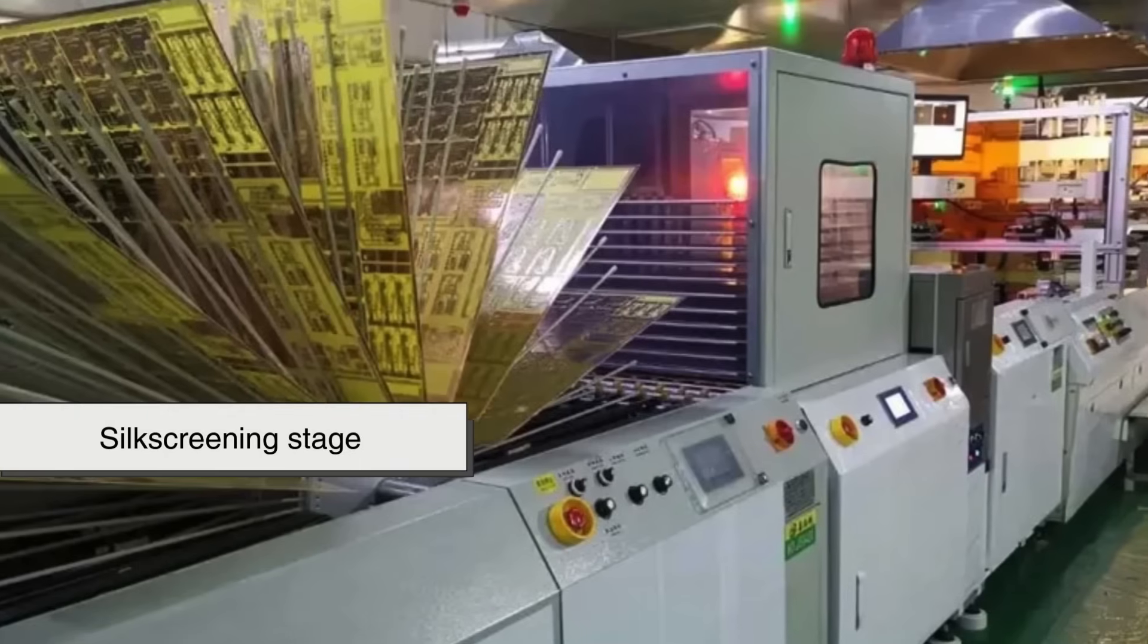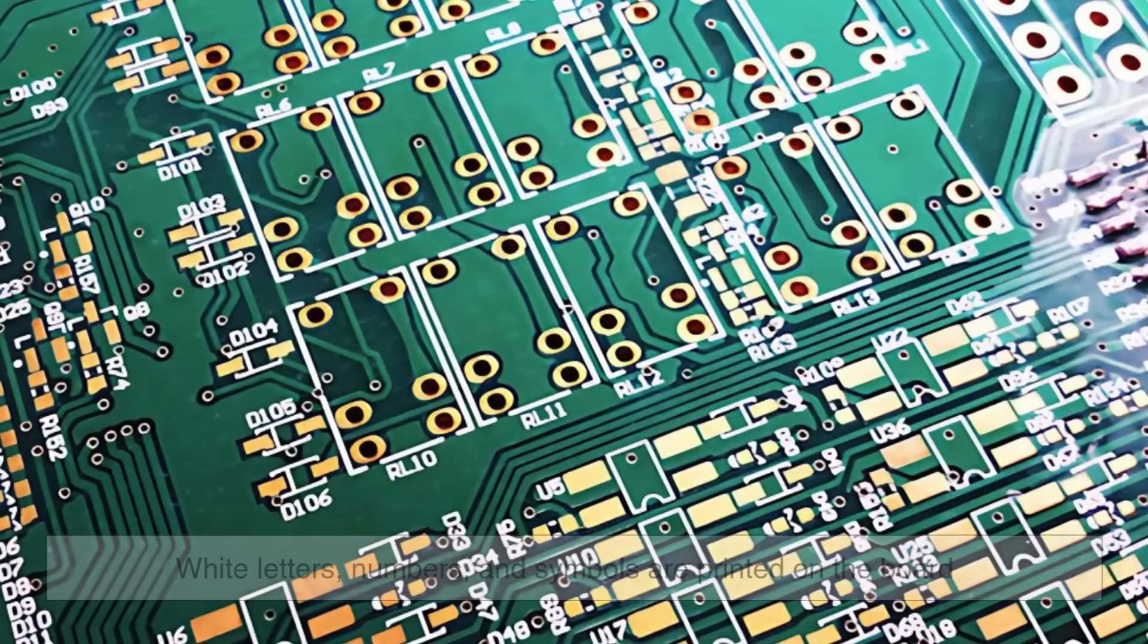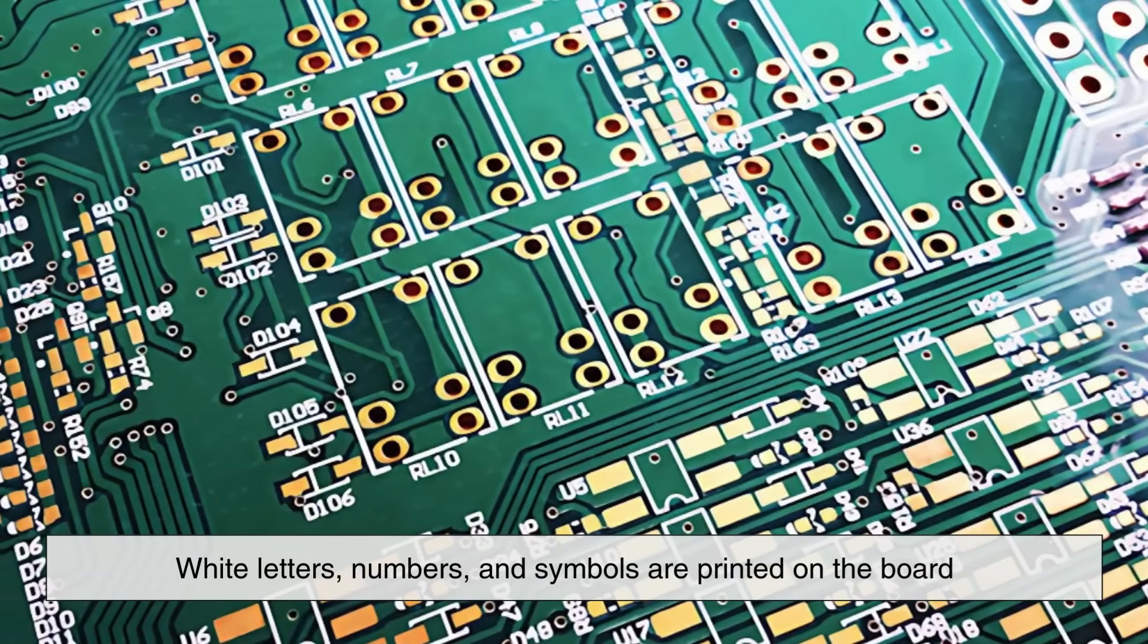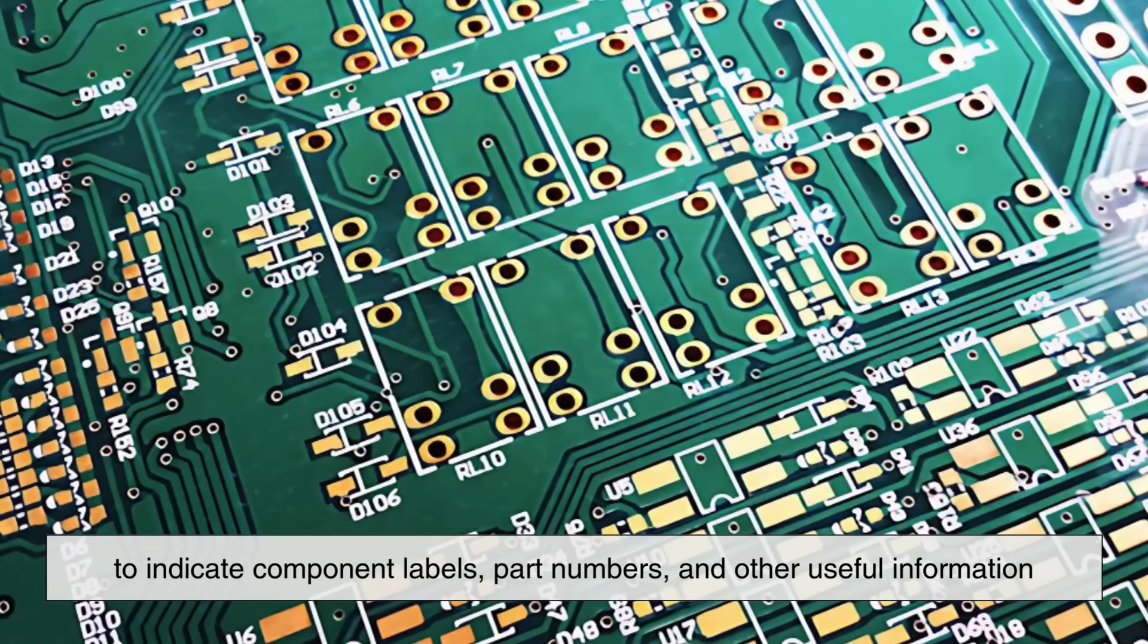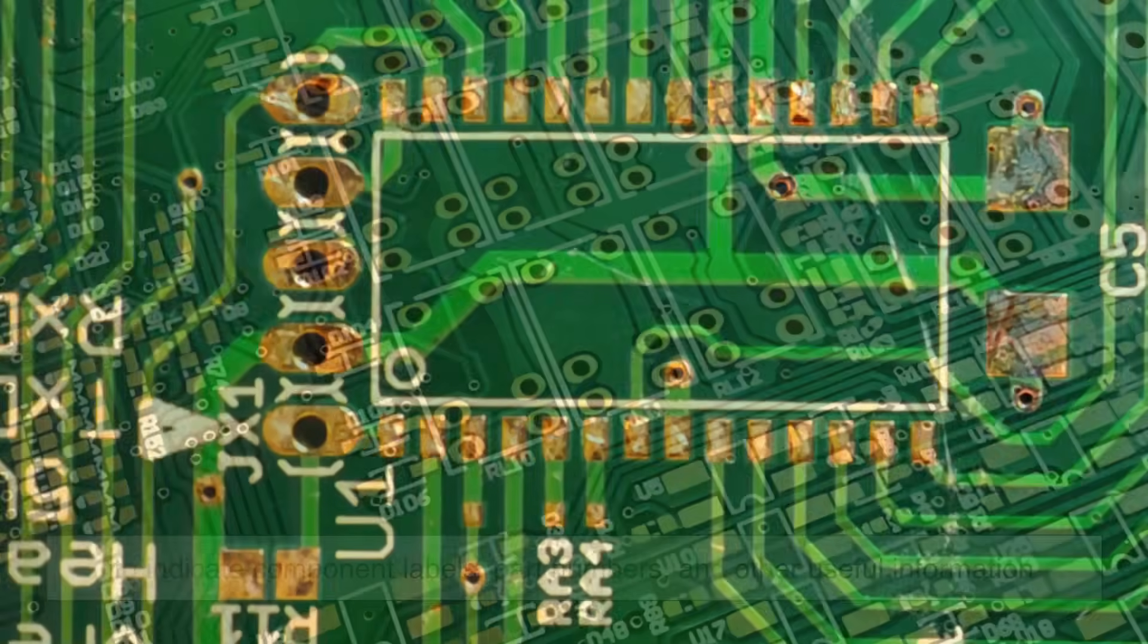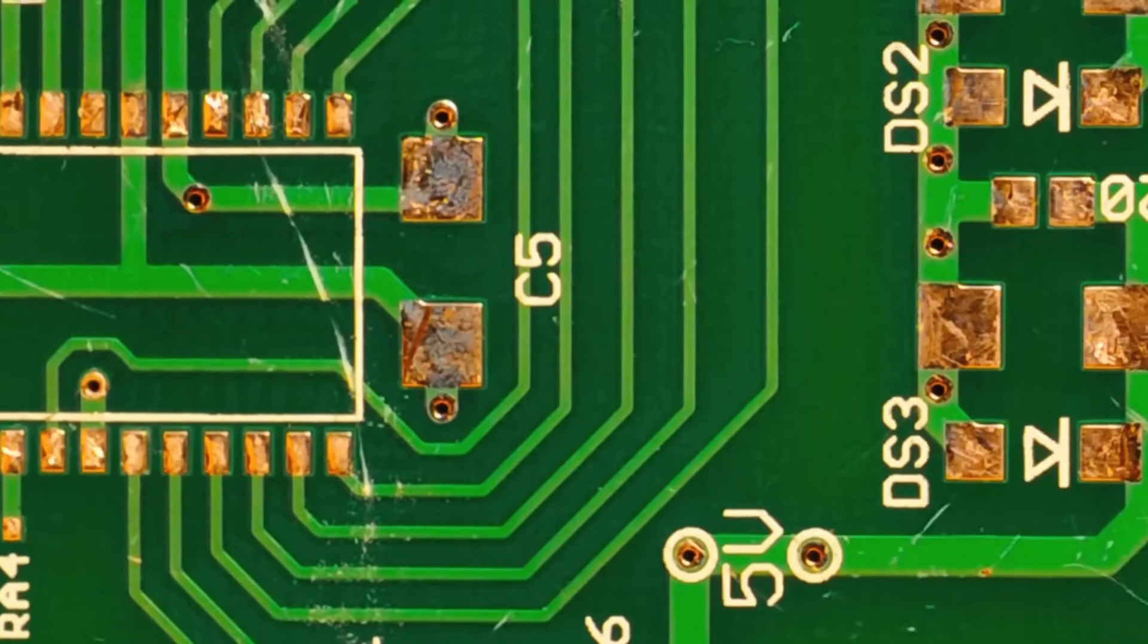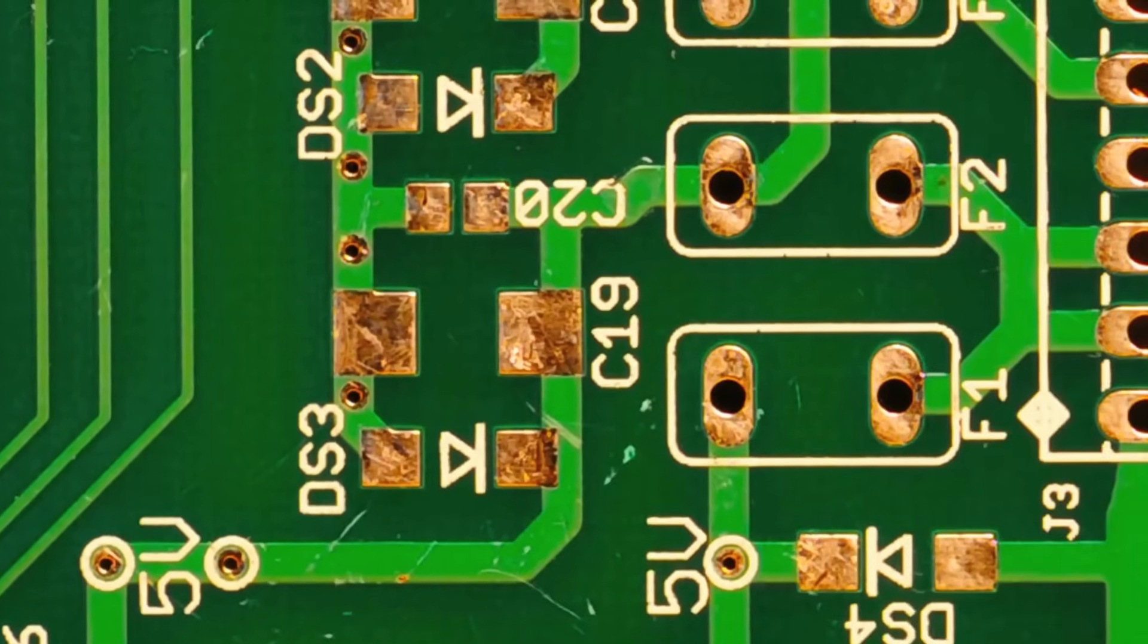Once cured, the board moves to the silk screening stage. This is where the white letters, numbers, and symbols are printed on the board to indicate component labels, part numbers, and other useful information. It's not electrically functional, but it's critical for assembly and troubleshooting.